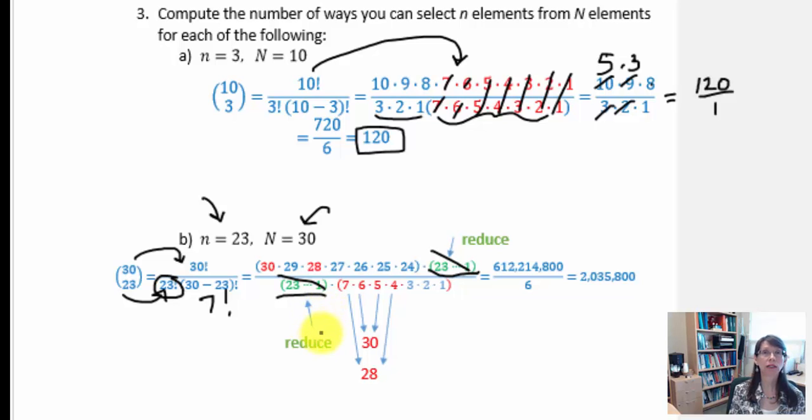So this is what I was leading into in our first example, that there really is no need to completely expand all the way down to times 1. Now what else do we have?